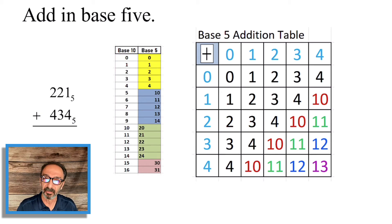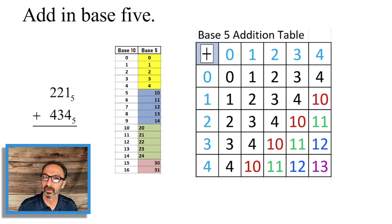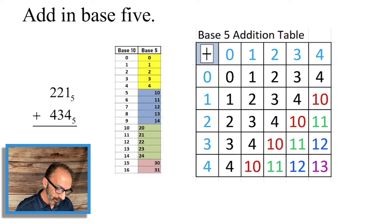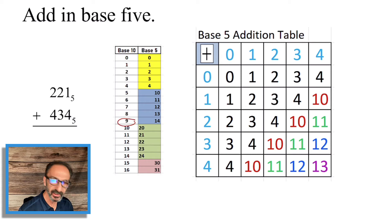We're going to add in base 5. I have two numbers here — the same applies to different examples, but I picked 221 base 5 and 434 base 5. Notice that in base 5 we don't use the number 5; we use the numbers 0, 1, 2, 3, 4. In base 10, when we reach 9 we're done.